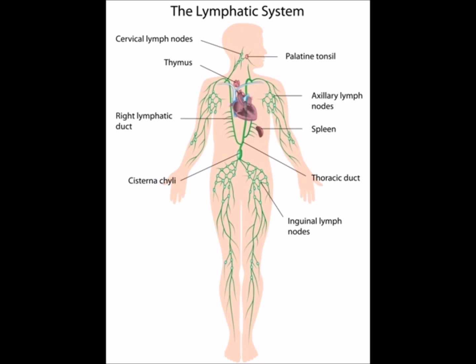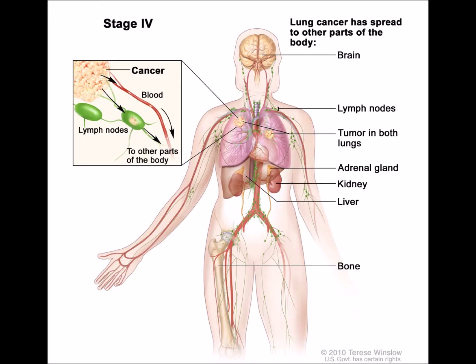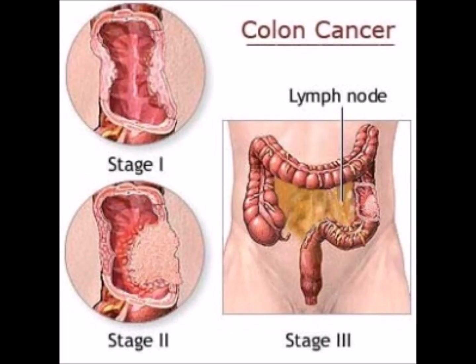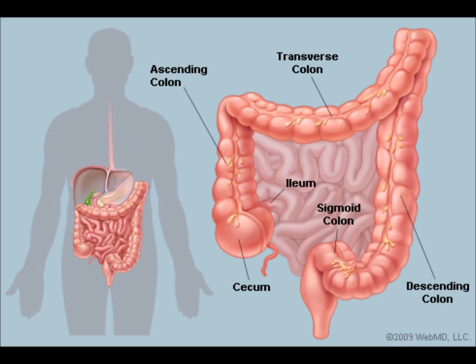The most common sites of cancer among women are breast cancer, colon cancer, rectum, lungs, cervix, and stomach. Cancer mortality is mainly due to metastatic tumors, also called secondary tumors. Only 10% of cancer deaths are caused by primary tumors. Here you can see a colon cancer where lymphatic nodes are destroyed and attacked by cancerous cells.